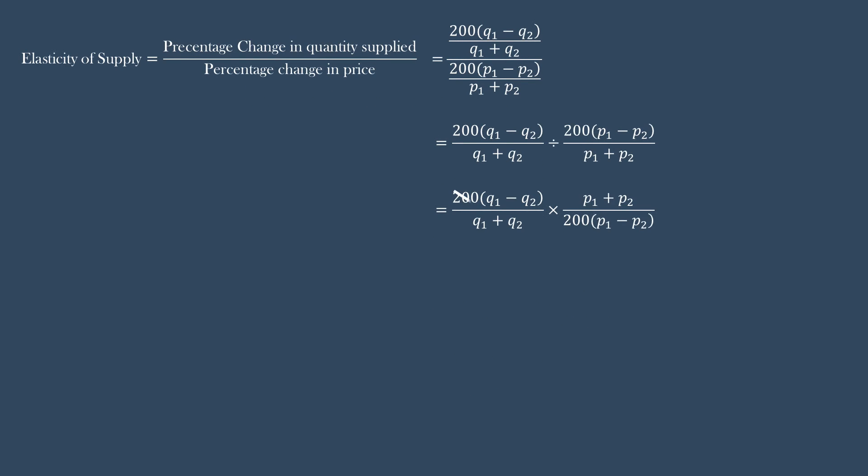Let us substitute these two values in the original formula. I have given all the steps involved in simplification. Finally, we get q1 minus q2 over p1 minus p2 times p1 plus p2 over q1 plus q2.